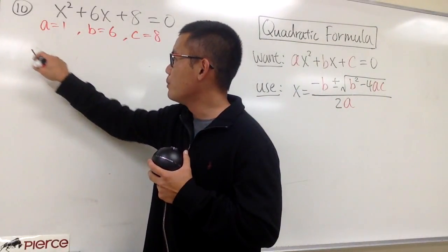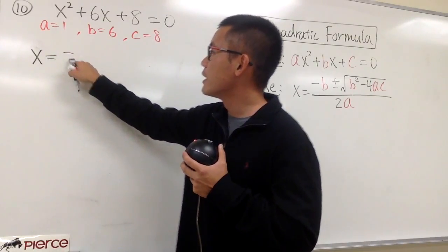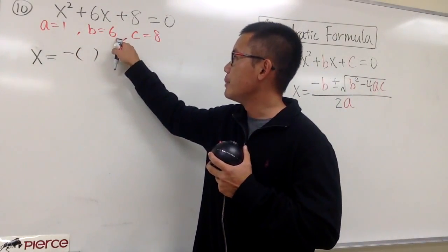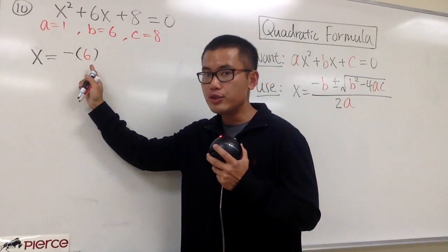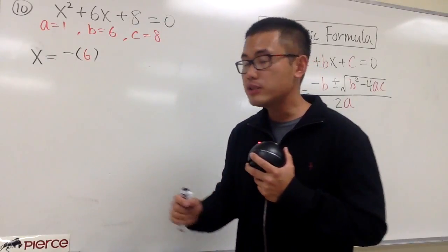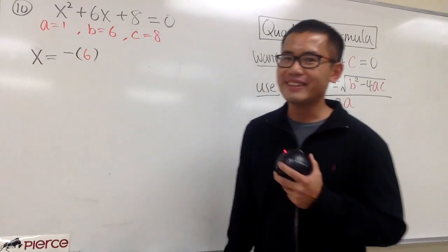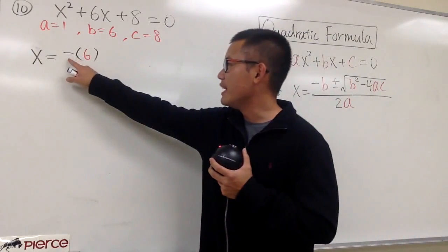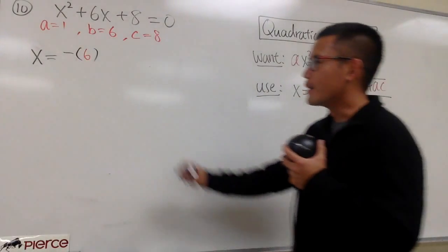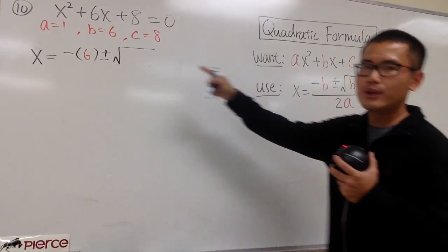By the quadratic formula, x will be negative b — let me open the parentheses for the b and put down the 6 right here. I like to tell my students: put down the parentheses whenever you are plugging numbers, especially if the b was negative, because those parentheses will be very appreciated. So we have negative parentheses 6 for the negative b. We'll put down the plus minus, and open that square root right here.